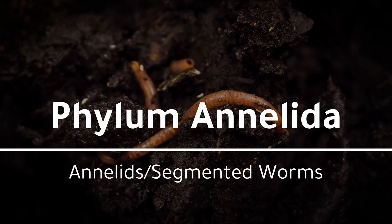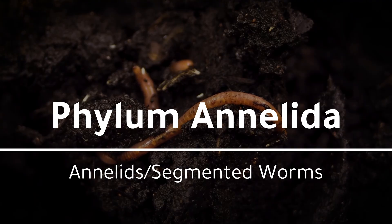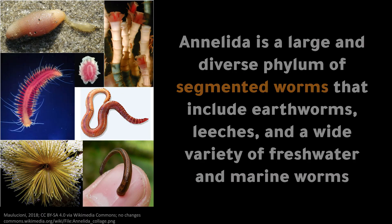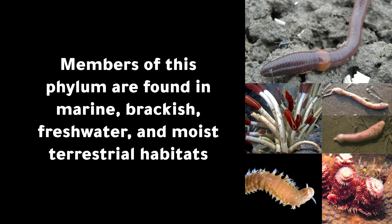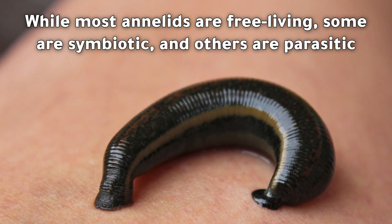Phylum Annelida — annelids or segmented worms. Annelida is a large and diverse phylum of segmented worms that includes earthworms, leeches, and a wide variety of freshwater and marine worms. Members of this phylum are found in marine, brackish, freshwater, and moist terrestrial habitats.